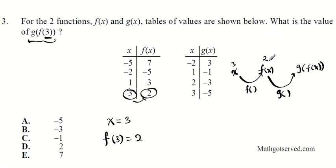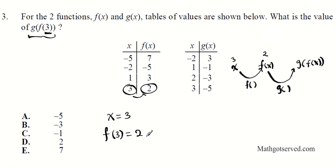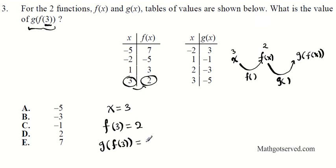Now this 2 becomes our new input to function G. So we're looking for G(F(3)), but since F(3) = 2, we're actually looking for G(2). Using the table that relates G and x: when x is 2, the output is negative 3. So G(2) = negative 3. Your final answer for number 3 is B.